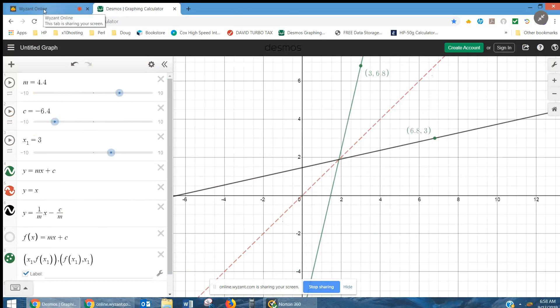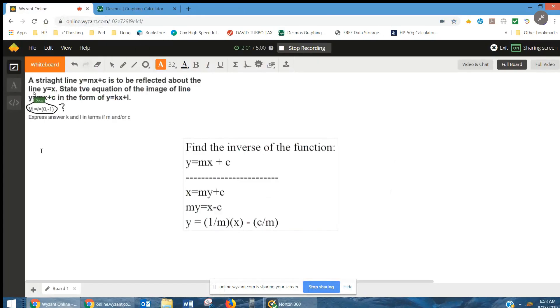So, if I go back to Desmos and ask the question, how do I find the definition for the new line? It's just like finding the inverse of the function y equals mx plus c.